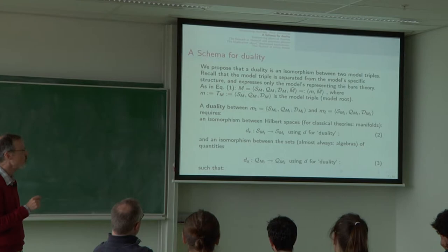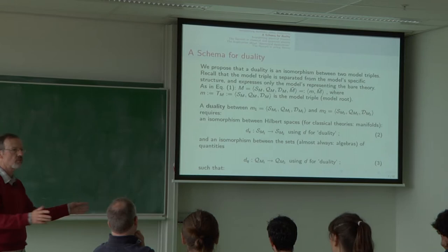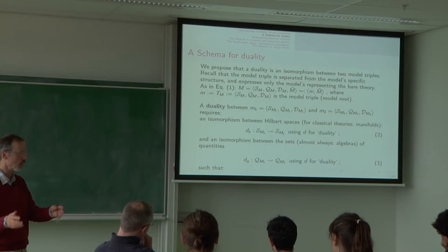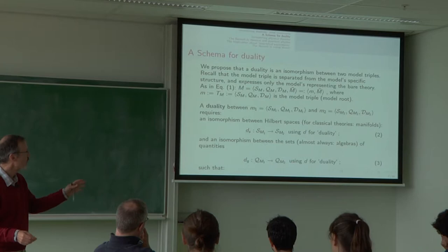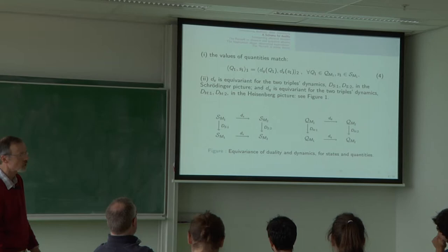So, what is the definition? Well, a duality is an isomorphism between model triples. So, there are two models, little M1 and little M2. They are, each of them, a triple: model triples. There needs to be an isomorphism between the states, G sub S, little d for duality, S for state. There needs to be an isomorphism between the quantities.